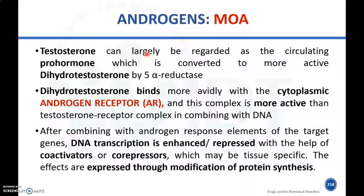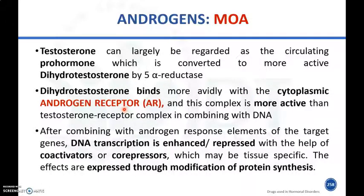Regarding the mechanism of action of androgens: testosterone, one of the natural androgens secreted by the testes, is regarded as a circulating prohormone. It is converted into the more active form dihydrotestosterone by the enzyme 5-alpha reductase. Dihydrotestosterone then binds with the cytoplasmic androgen receptor, forming a more active complex than the testosterone-receptor complex.